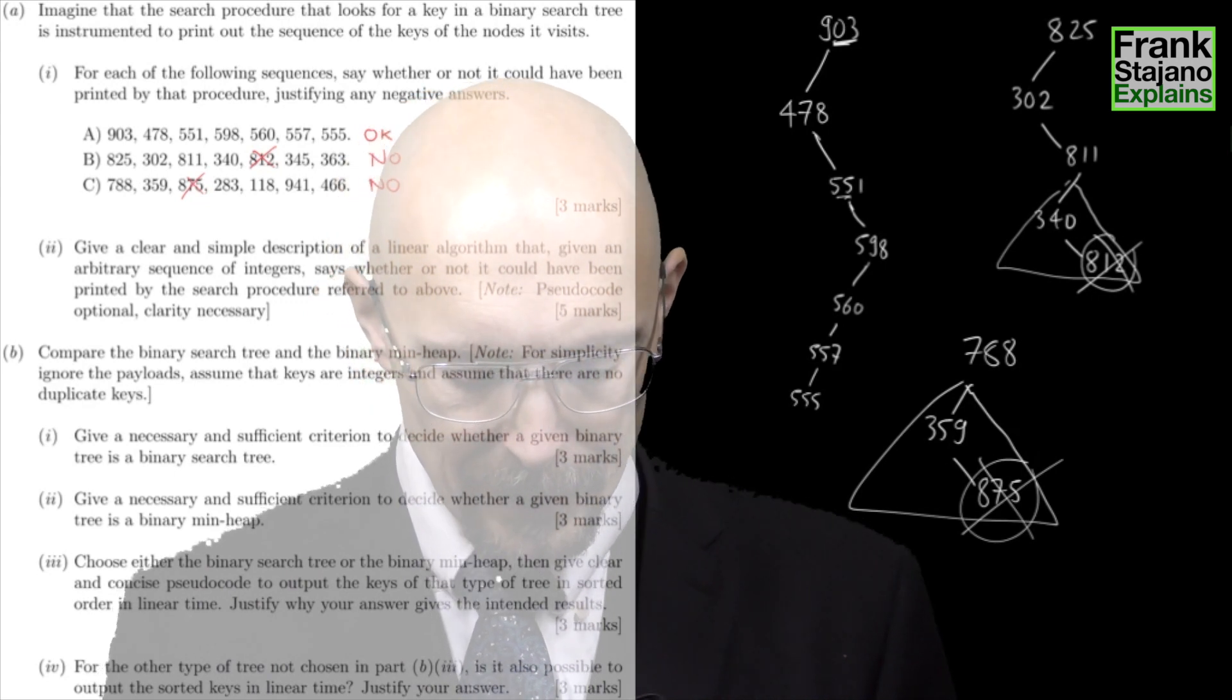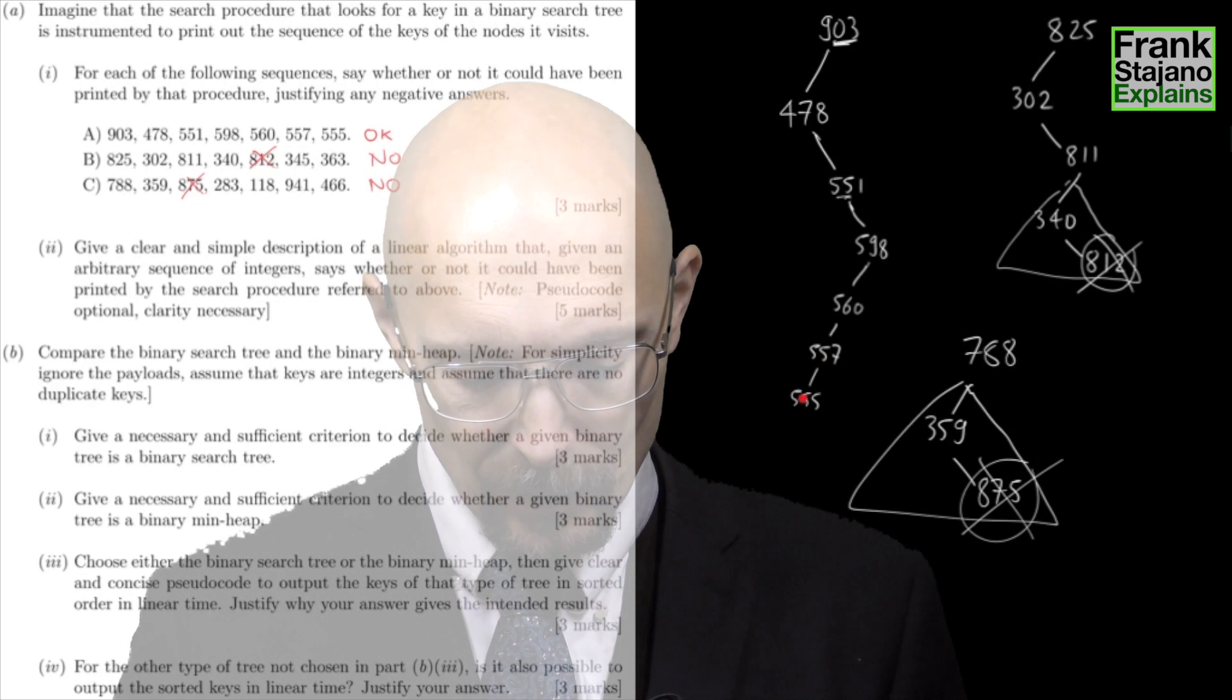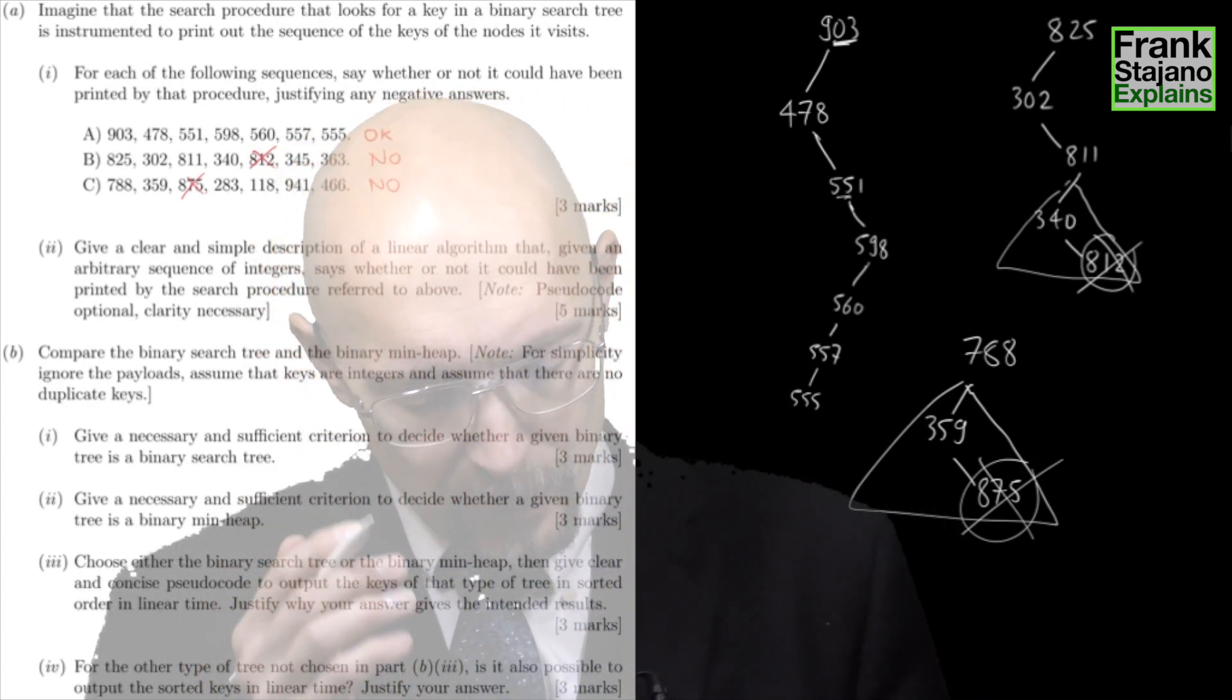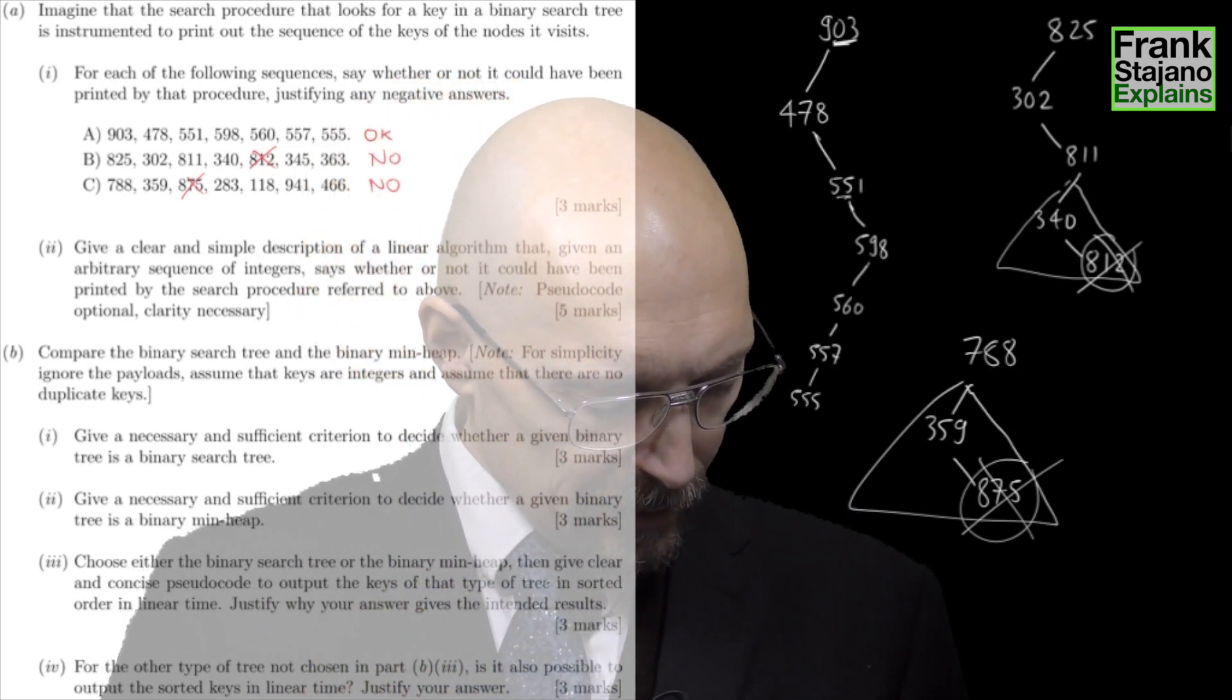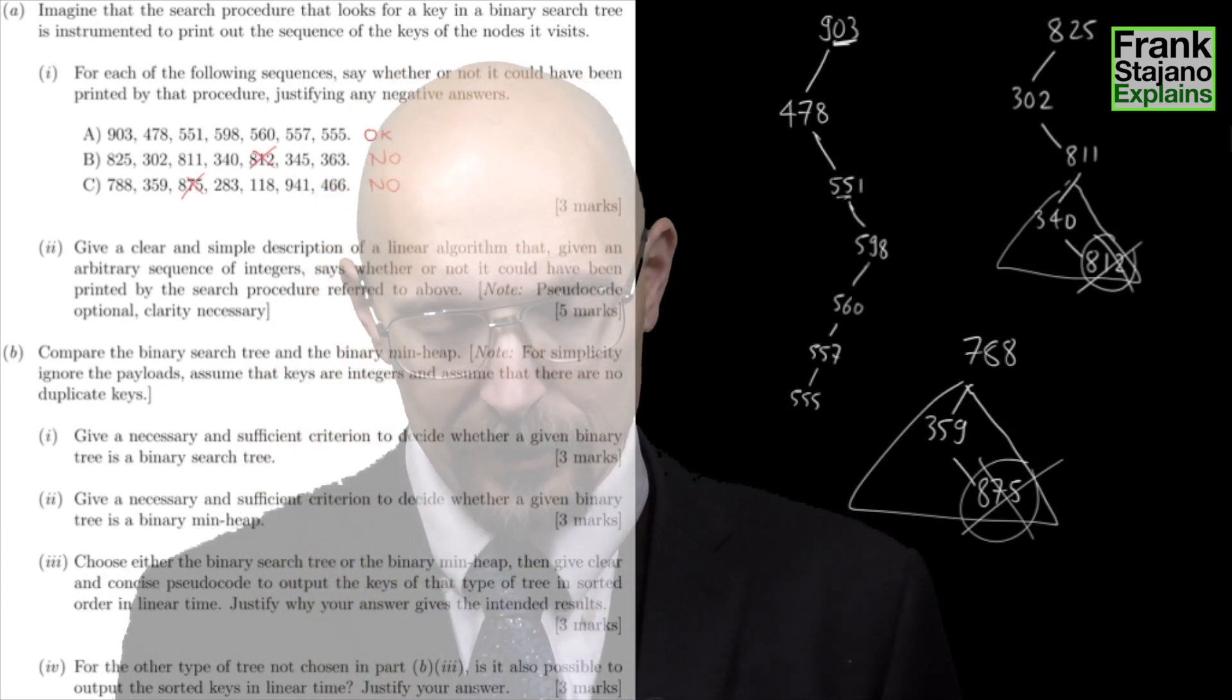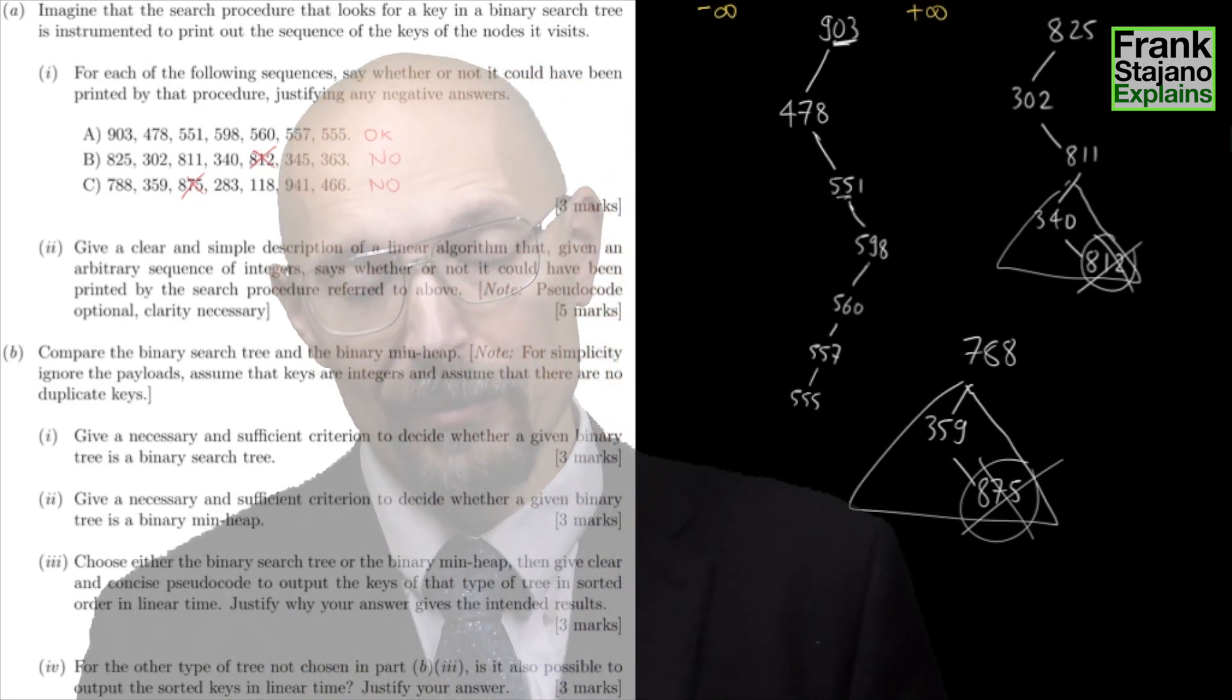I can view this procedure as basically maintaining a minimum and a maximum boundary that determine what range is allowed for the values I see next. So when I start, there's no constraints, and so the minimum is minus infinity and the maximum is plus infinity. Then I get 903, it's within the bounds, so I accept 903.